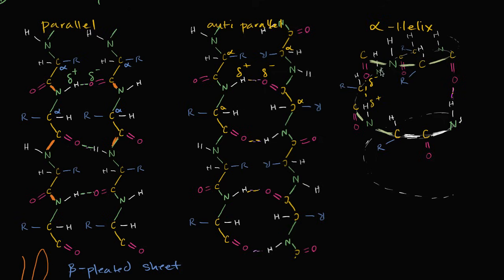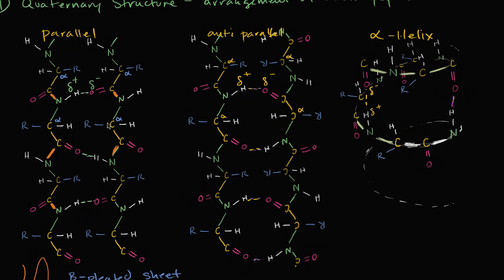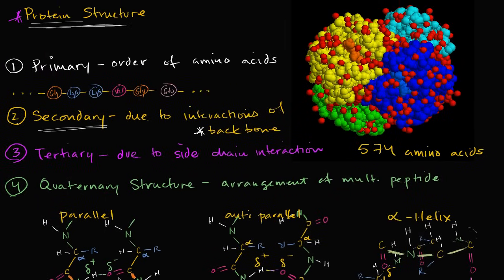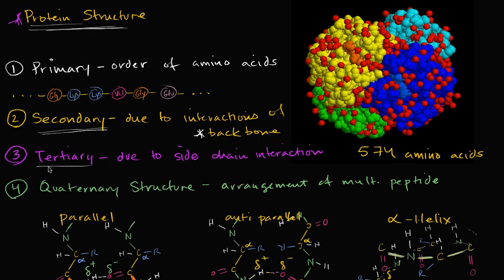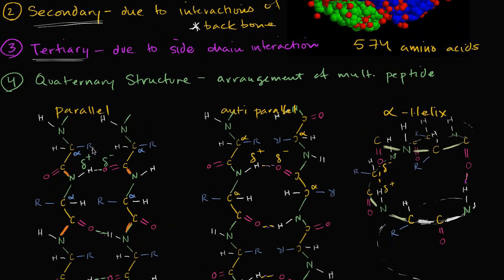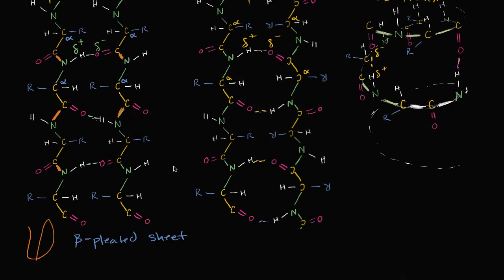Or you could have an alpha helix like this, where you have hydrogen bonds between the different layers of your actual helix. And then we can get to tertiary structure. And tertiary structure is where we finally talk about interactions of the side chains, where we start to think about, what are these R groups? And how would these R groups actually affect the entire shape of the protein?